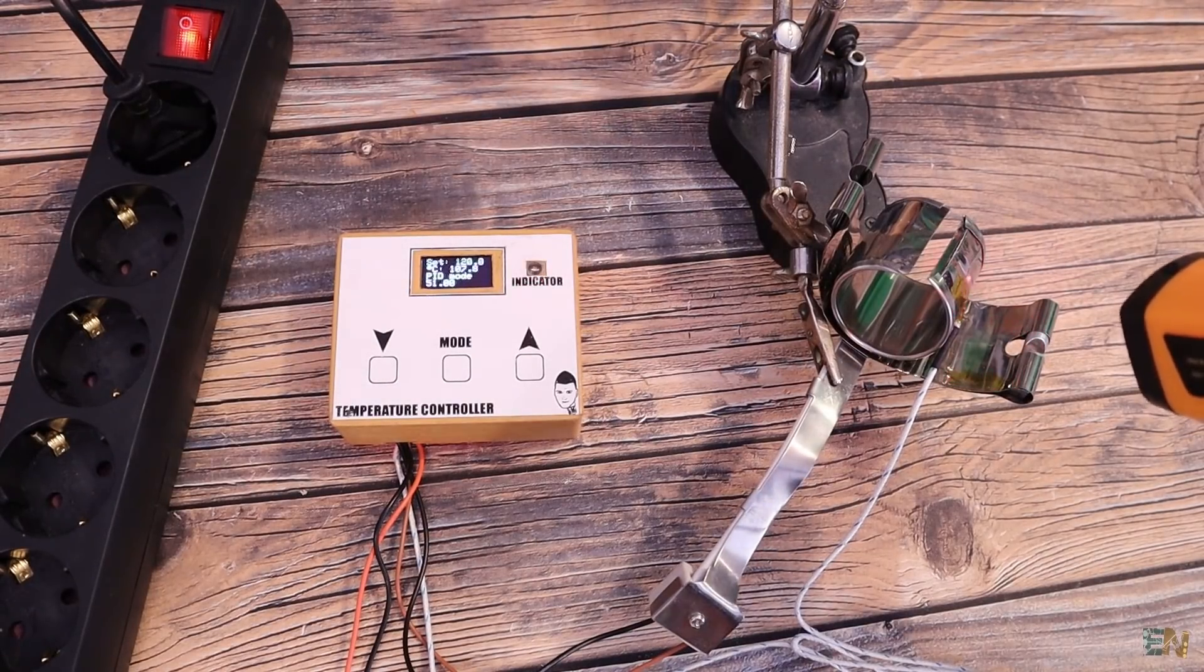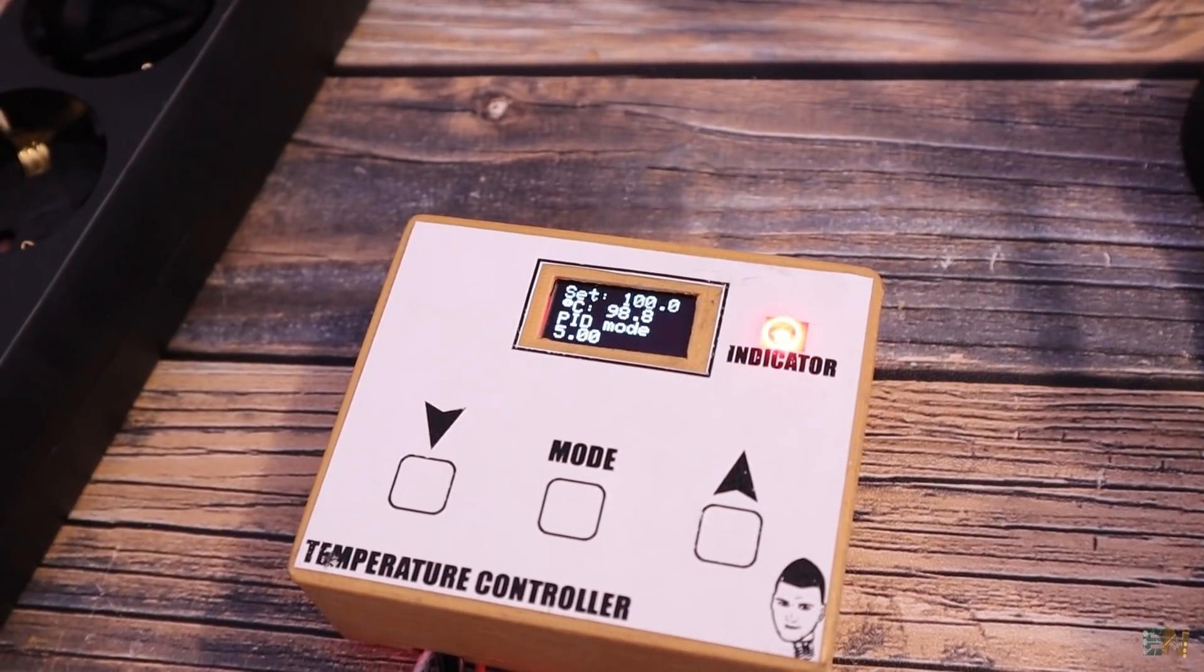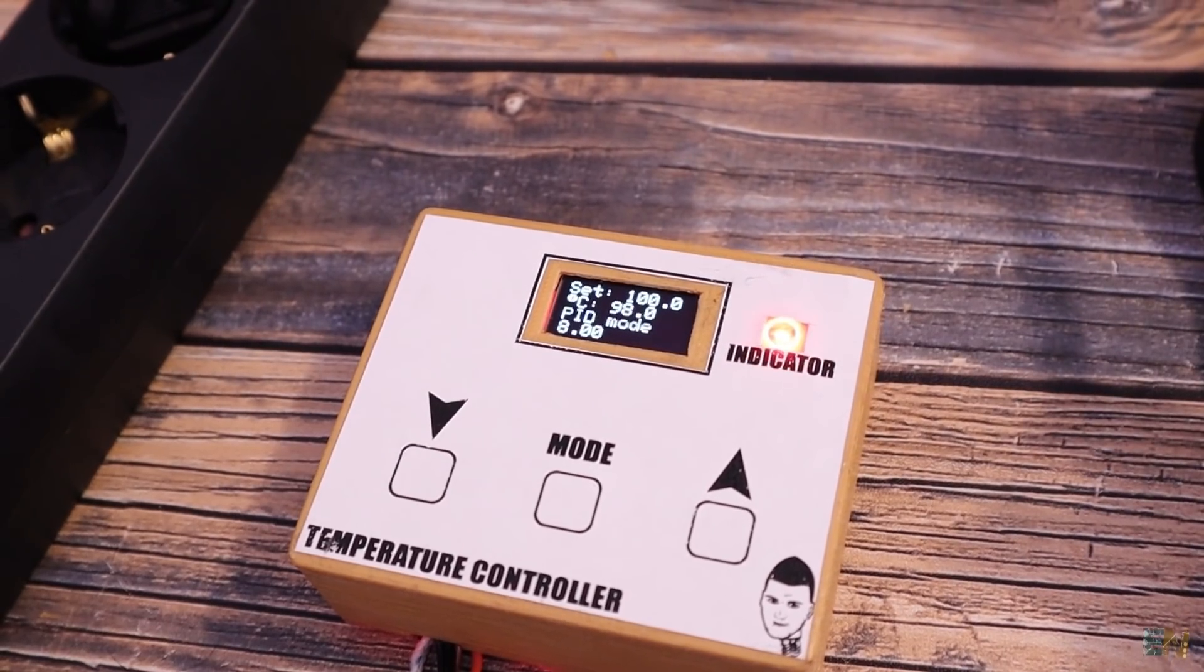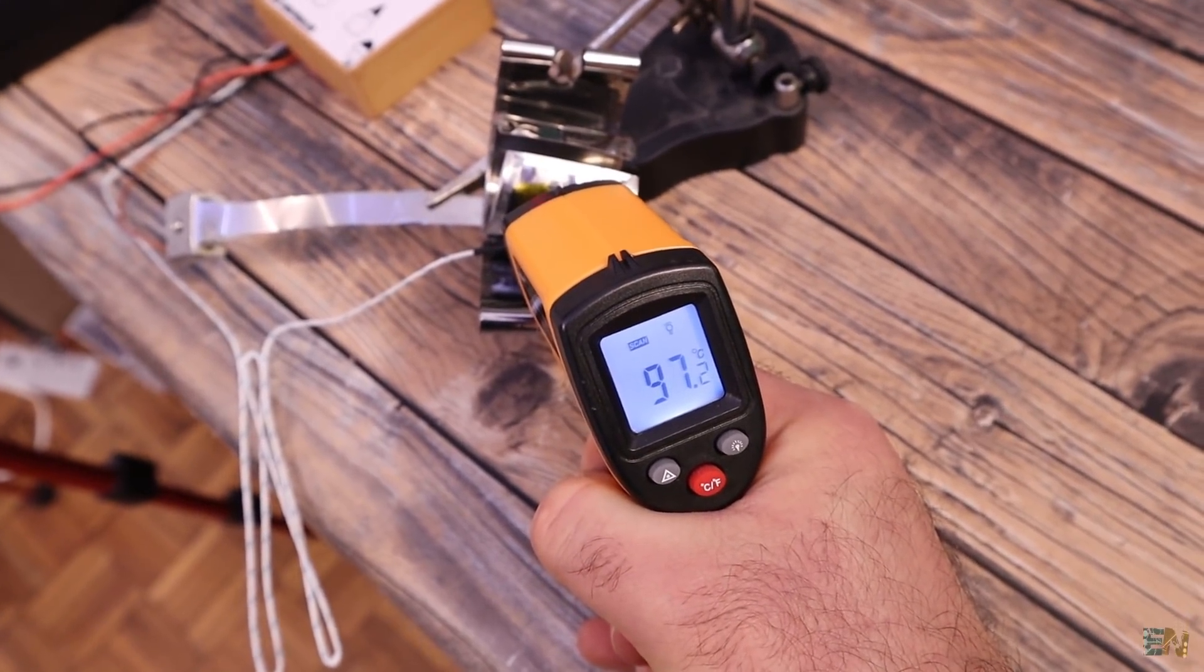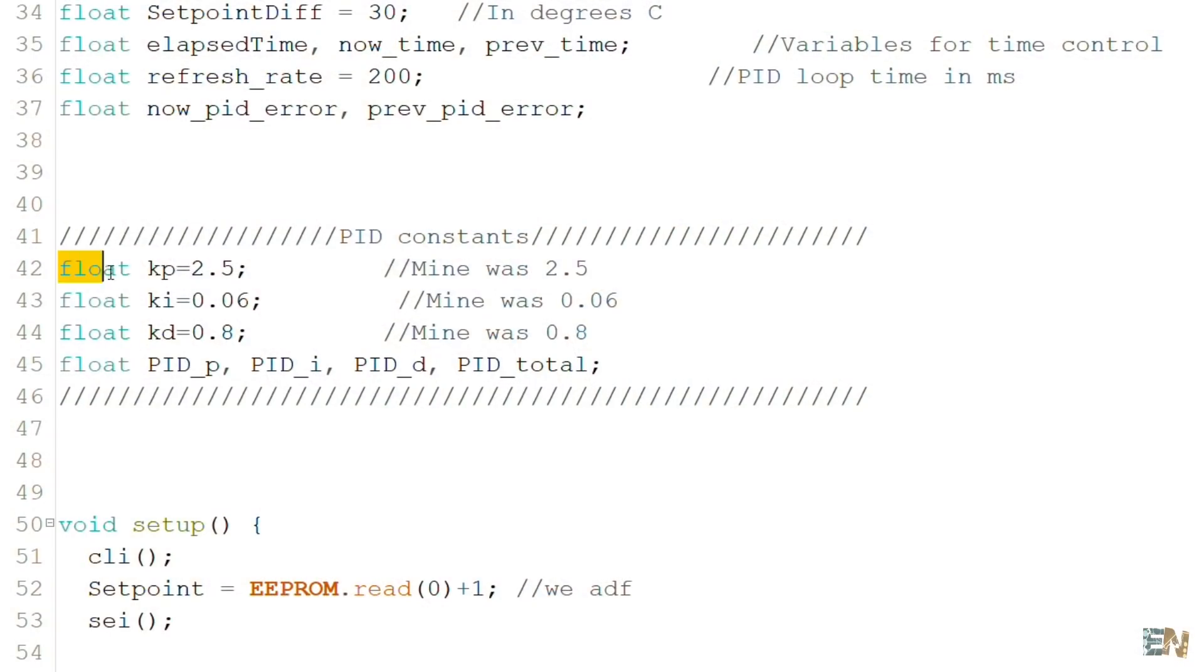So now I have it set to 100 degrees and it seems to stay around that value a bit better. I've checked the value with my digital thermometer as well. To change the PID values, go and check these first lines in the code and change the P, I and D values.